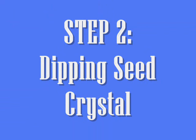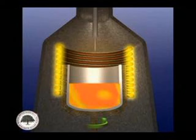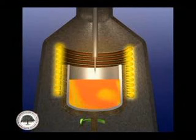Step 2: Dipping the seed crystal. A small piece of single crystal material, known as a seed crystal, is dipped into the saturated molten silicon solution. The seed crystal is used to grow a large crystal of the same material. The large crystal begins to grow when the seed crystal is dipped into the melt and then slowly cooled.